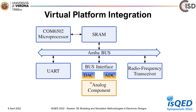Our half-wave rectifier is integrated into this part of the platform. The half-wave rectifier is used to provide DC voltage. The advantage of integrating several heterogeneous components within the virtual platform is that validation of the functionality of the entire system can be performed before taking into production.